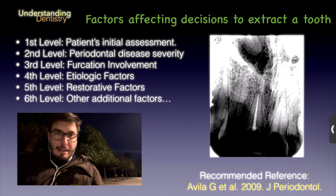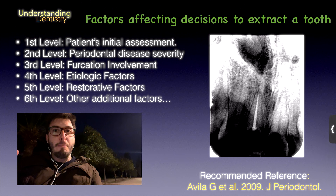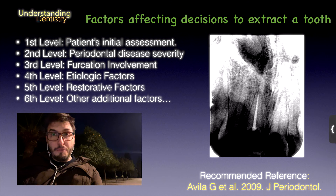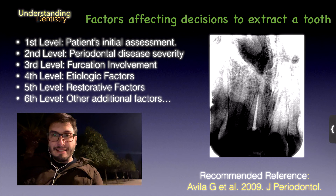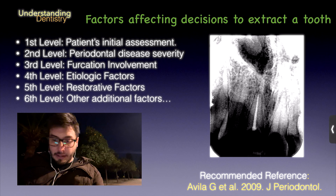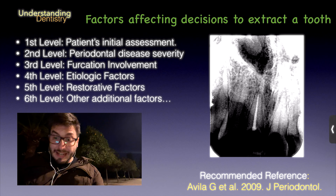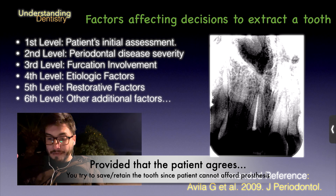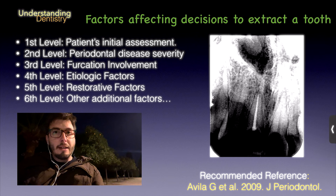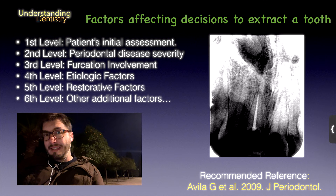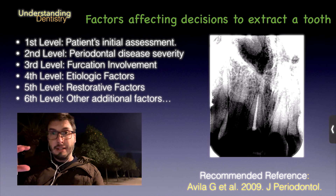The first level is the patient's initial assessment, with categories like patient expectations. Green light means the patient is willing to save the tooth, whereas red light means the patient wants to extract the tooth — and that will affect the treatment outcome. Treatment expectations — if aesthetics are involved, it's yellow; if the aesthetic area is not involved, it's green. For finances, if limited, it's green because you try to keep the tooth; if adequate, it's yellow, because you still need to assess other factors. So for each category you define a color, and at the end of the assessment you make a decision based on the number of colors obtained.